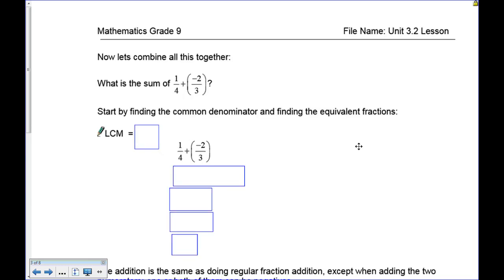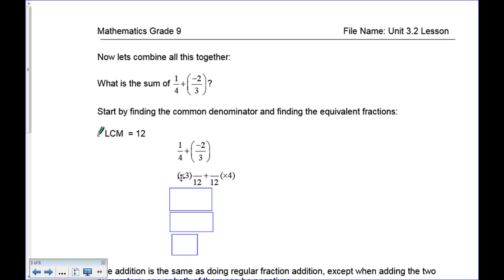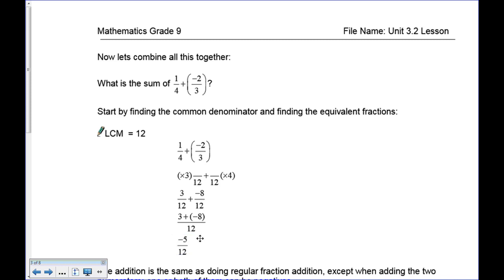Now let's put this into fractions. What is the sum of one quarter plus negative two thirds? We start by finding the lowest common multiple of four and three, which is 12. Four times three is 12, so one times three gives three. Three times four is 12, so two times four is eight — and since it's negative, that's negative eight. Now with the same denominators, we add three plus negative eight. There are eight negatives and three positives, so three negatives disappear: eight take away three leaves five negatives. The answer is negative five over 12.